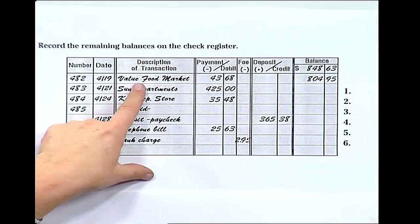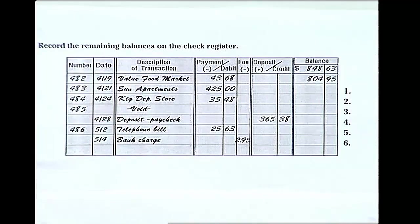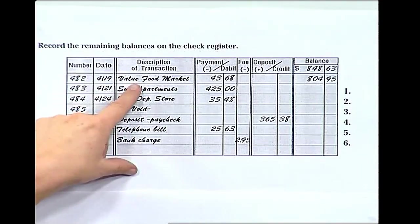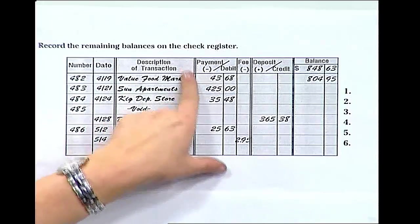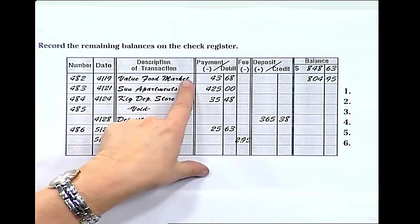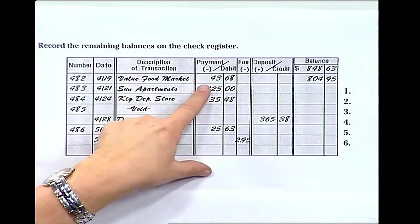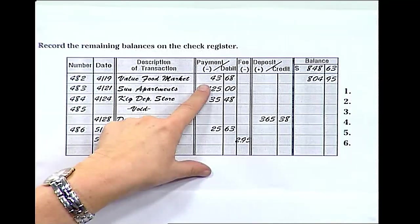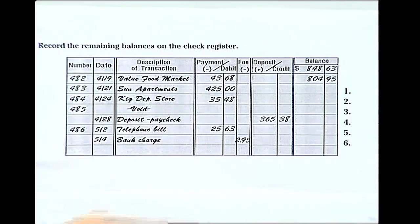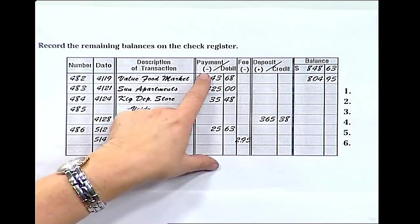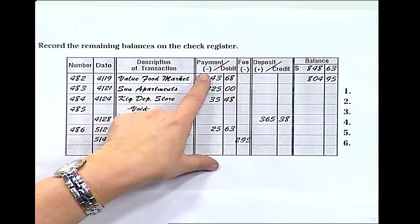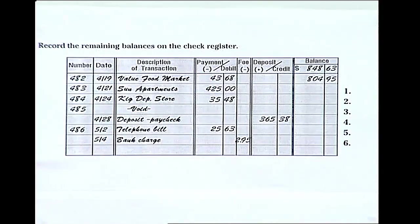The description of the transaction will tell the business that received your check. It can also tell what you spent the check for. In this column, you'll notice it says payment or debit. When you write a check, it is called a debit, and it's a way of making a payment to another company. This column has a little subtraction sign in it to remind you that when you write a check, it must be subtracted from your account.